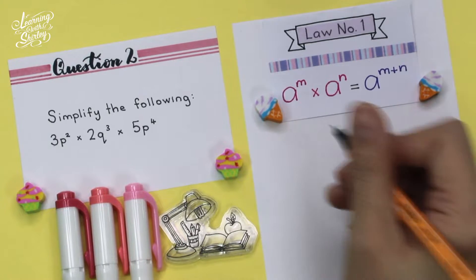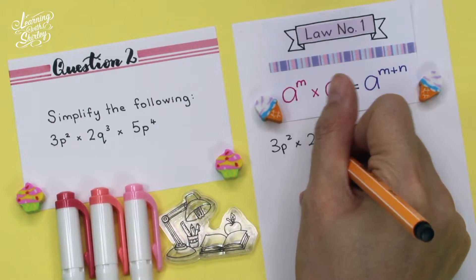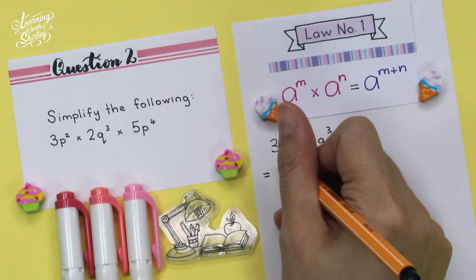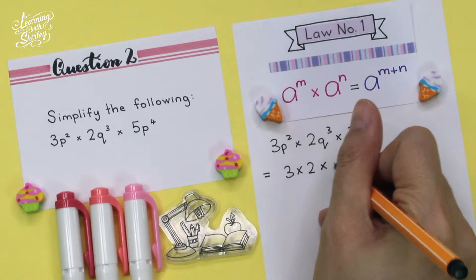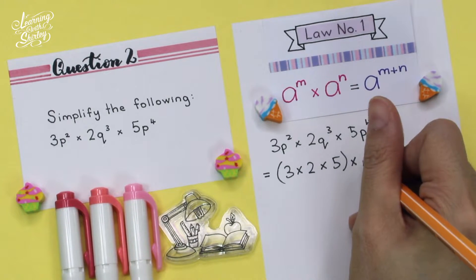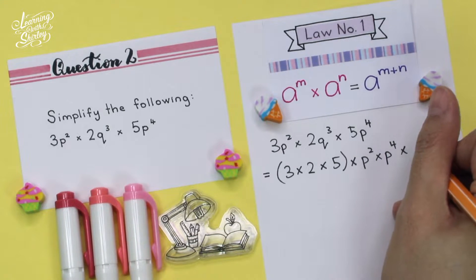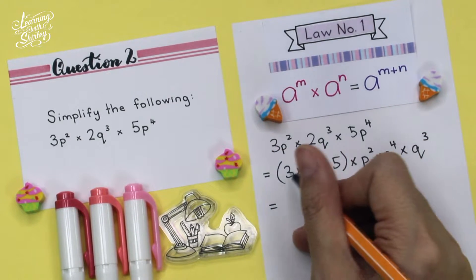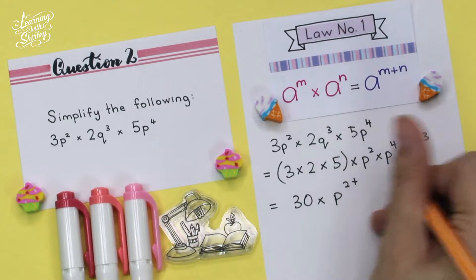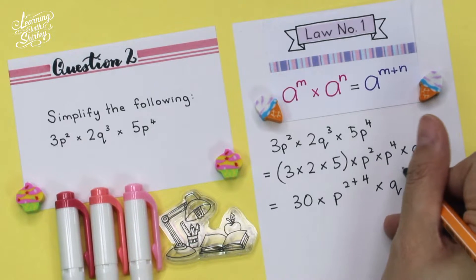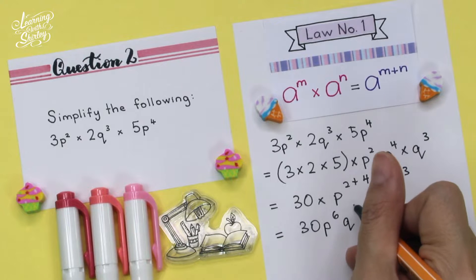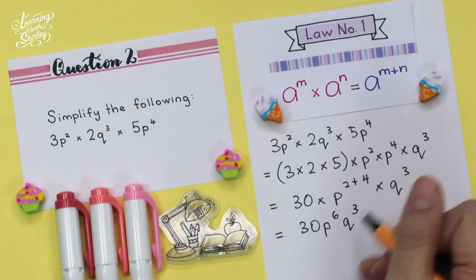First of all, I am going to write down the question: 3p square times 2q cubed times 5p power 4. So equals 3 times 2 times 5 — these are the coefficients, which I am grouping together first — times p square times p power 4 times q cubed. So 3 times 2 times 5 is 30, times p power 2 plus 4, times q cubed. So the final answer is 30p power 6 q cubed. We can omit the multiplication sign in the final answer.